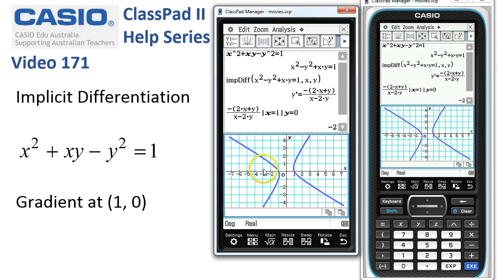There it is! You can see there is our actual implicitly defined function, and what we just determined was at (1, 0), which is just here, the gradient is negative 2.